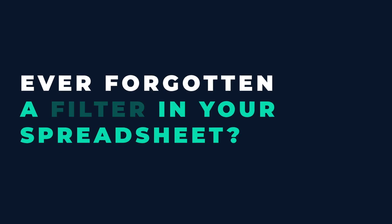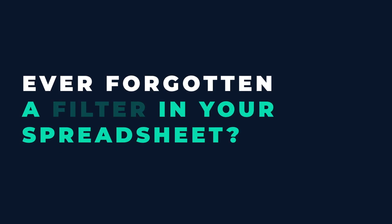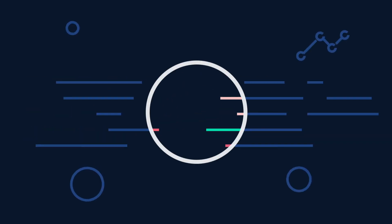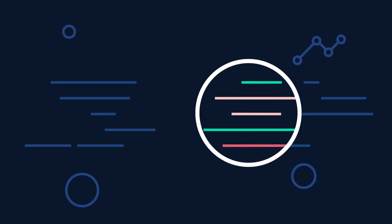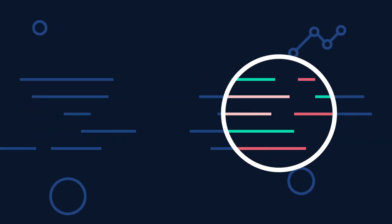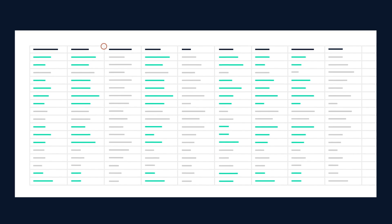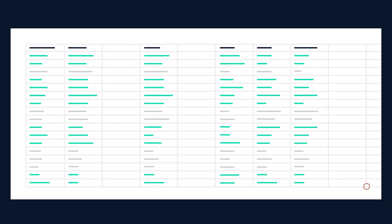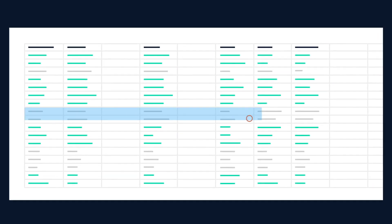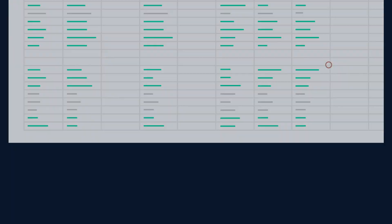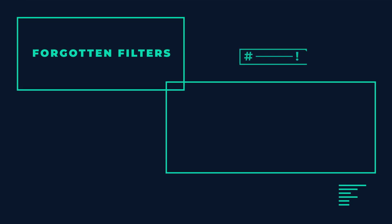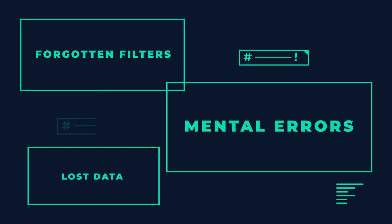Ever forgotten a filter in your spreadsheet? To discover data's deeper meaning, you need to view it through your own preferences. With spreadsheets, you're forced to filter, sort, and pivot just to transpose and rearrange the data exactly the way you want it. These tasks aren't difficult, but they're super manual and prone to error.